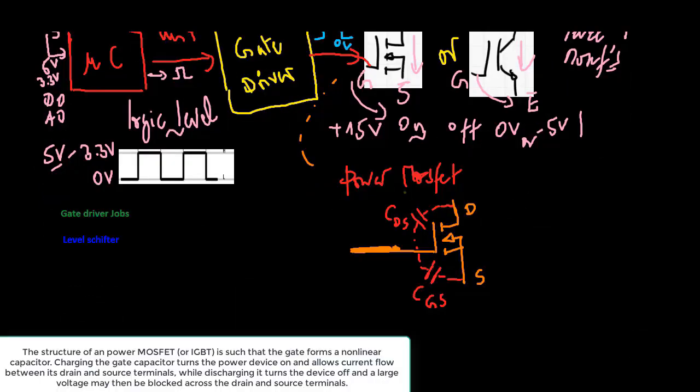The structure of a power MOSFET is such that the gate forms a non-linear capacitor. Charging the gate capacitor turns the power device on and allows current flow between its drain and source terminals, while discharging it turns the device off and a large voltage may then be blocked across the drain and source terminals.